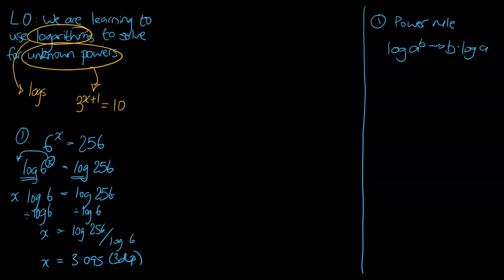We're now going to have a look at a second question — it's got a slightly different theme, similar to the first one but a slight variation. Let's say we've got 2^(2x+1) equals 39. Our job is to figure out what x is equal to. The thing that should immediately draw your attention is that unknown power.